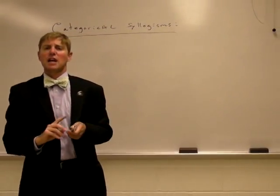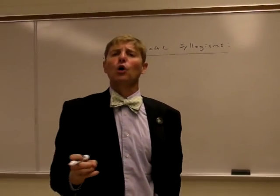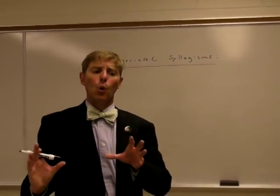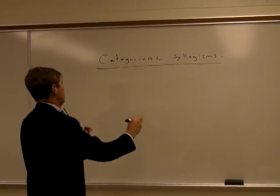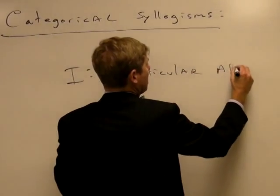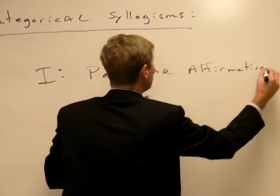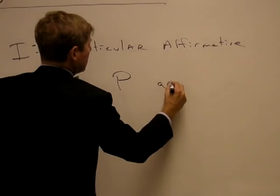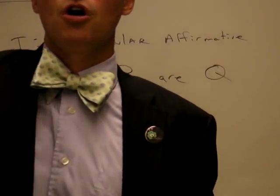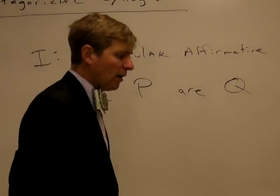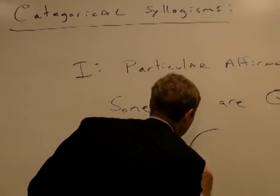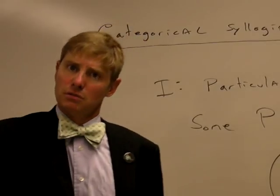The next two kinds of statements, I and O statements, are going to be particular statements. We won't be talking about an entire classification of things — we will be discussing some. An I-statement, also known as a particular affirmative, looks like this: 'Some P are Q.' For example, 'some wine drinkers are alcoholics,' 'some men are people who have beards,' or 'some jeans are Levi's jeans.'